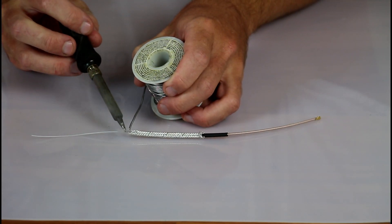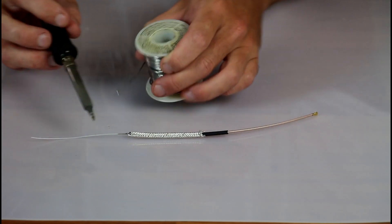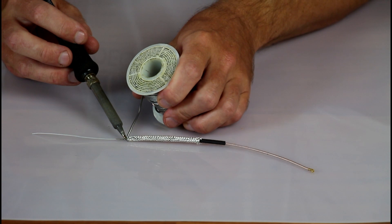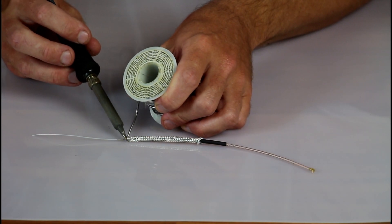Take a soldering iron and very carefully solder the braid to the exposed section of the internal coaxial cable shield. Do not use too much heat here as you do not want to over shrink the internal 1 1/8 inch heat shrink tubing.